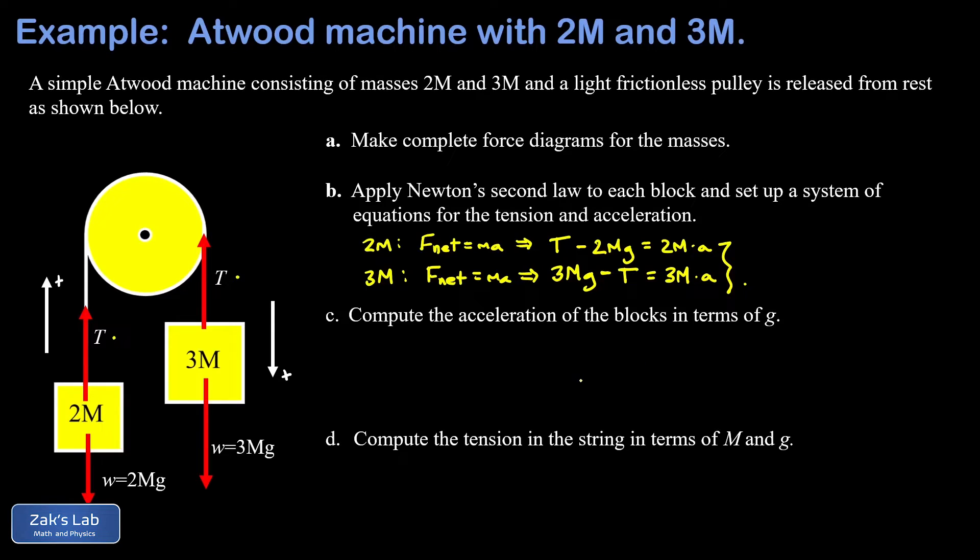Now in Part C, we want to get the acceleration of the blocks in terms of g. So like so many of these Atwood machine problems, we take advantage of elimination. If I add these two equations, the t's are going to cancel. On the left-hand side, we get negative 2mg plus 3mg, which is just 1mg. On the right-hand side, we get 5m times a. Our m's are going to cancel out, and we quickly solve for a here. That's g over 5. So the acceleration of this system is one-fifth the acceleration of freefall.